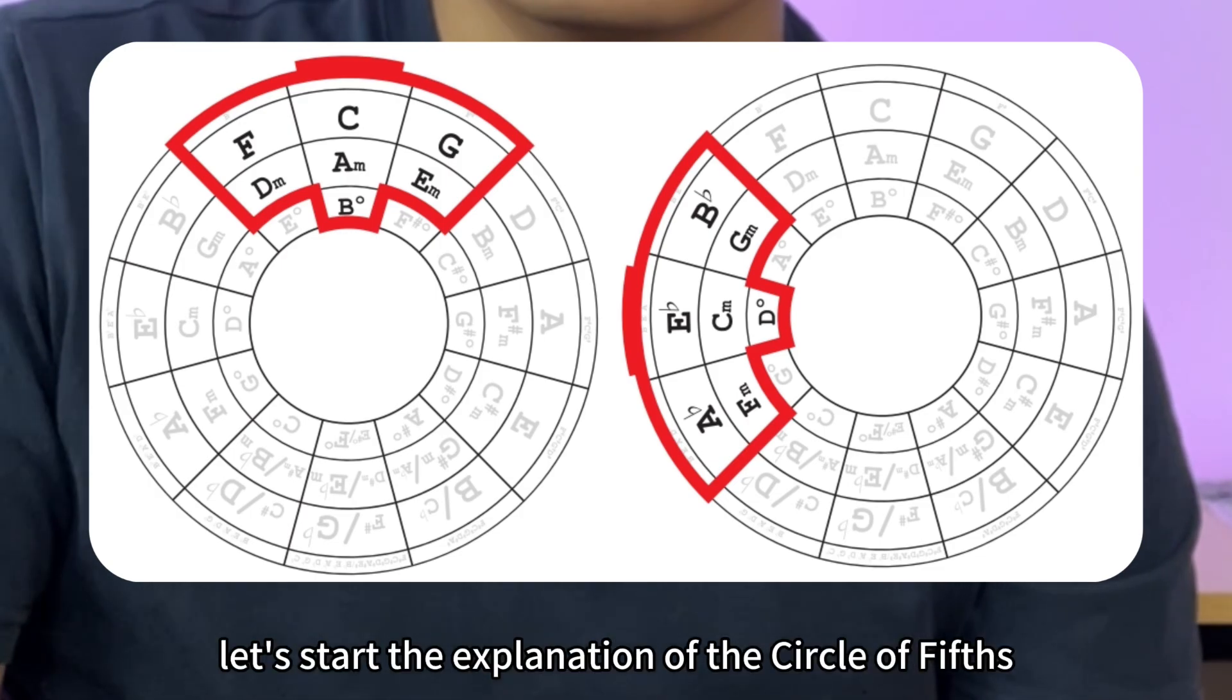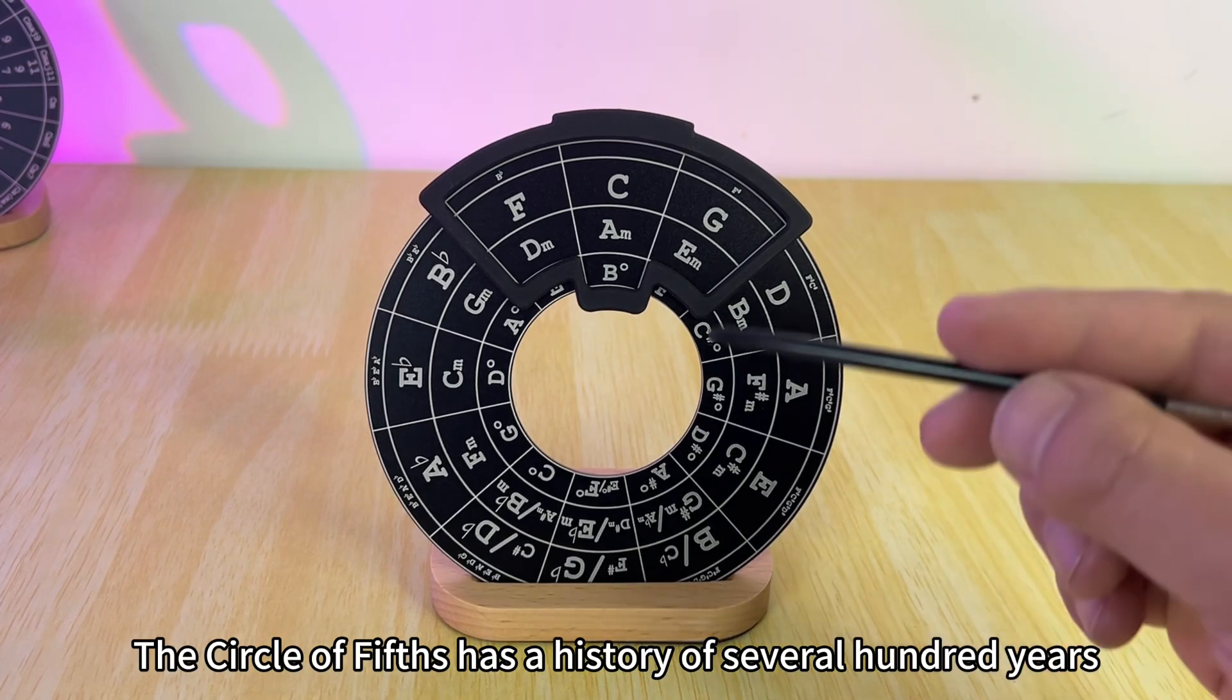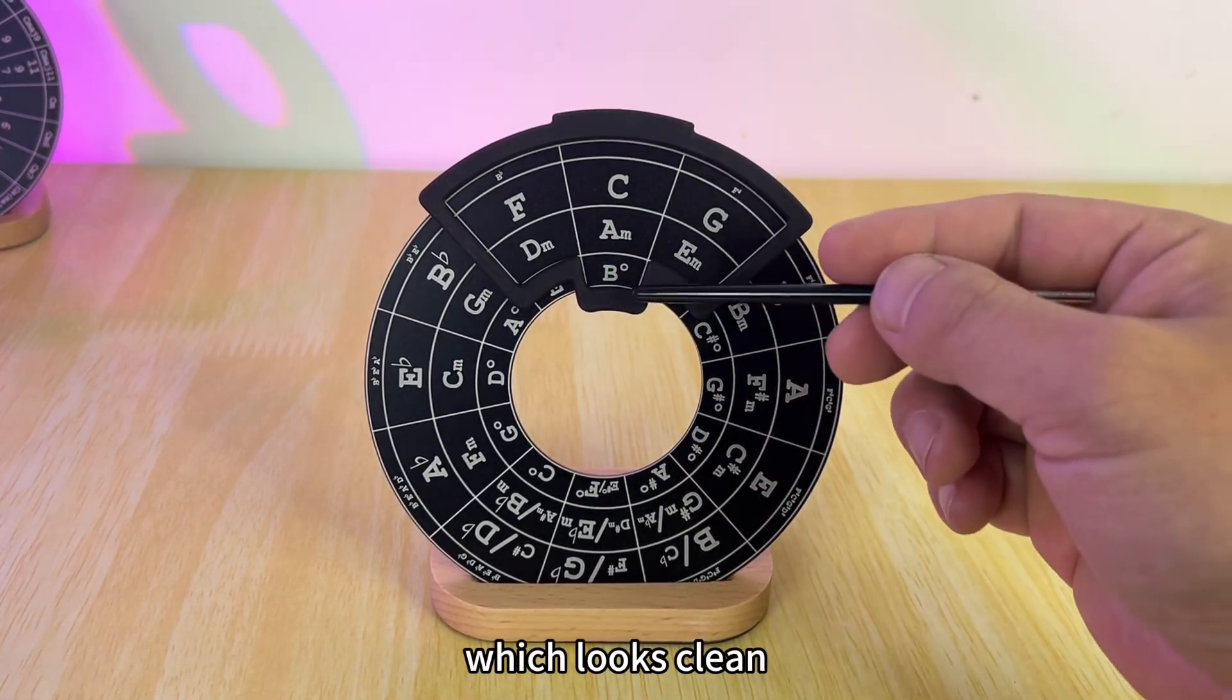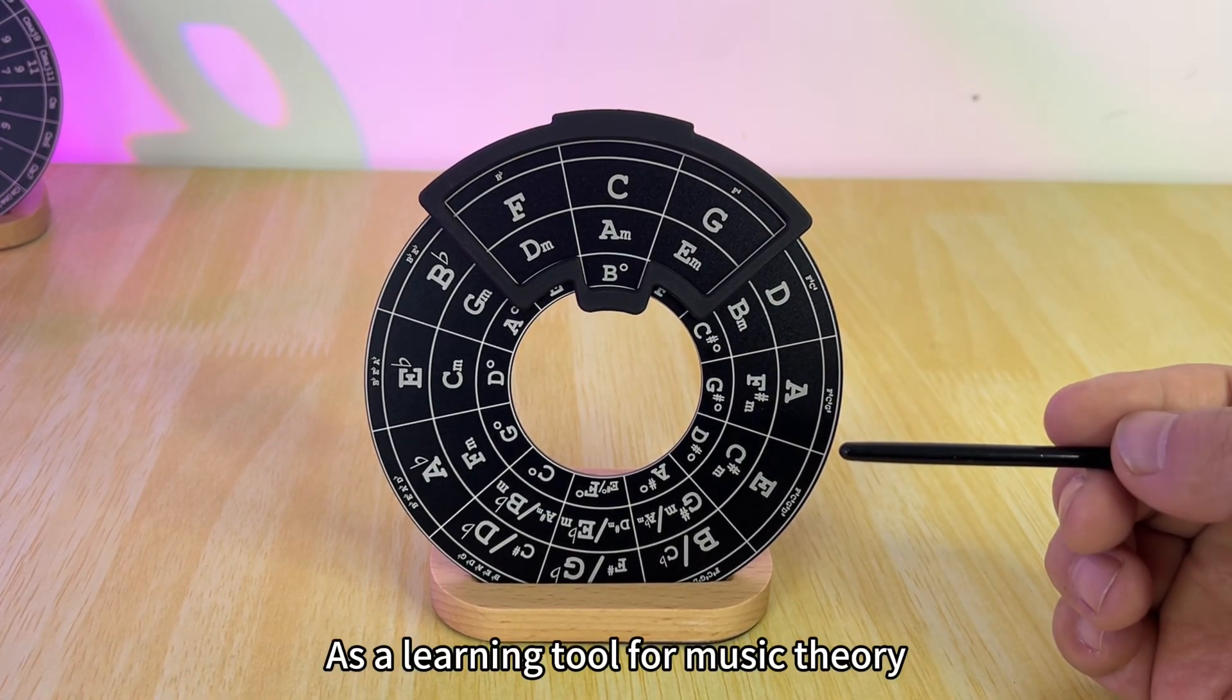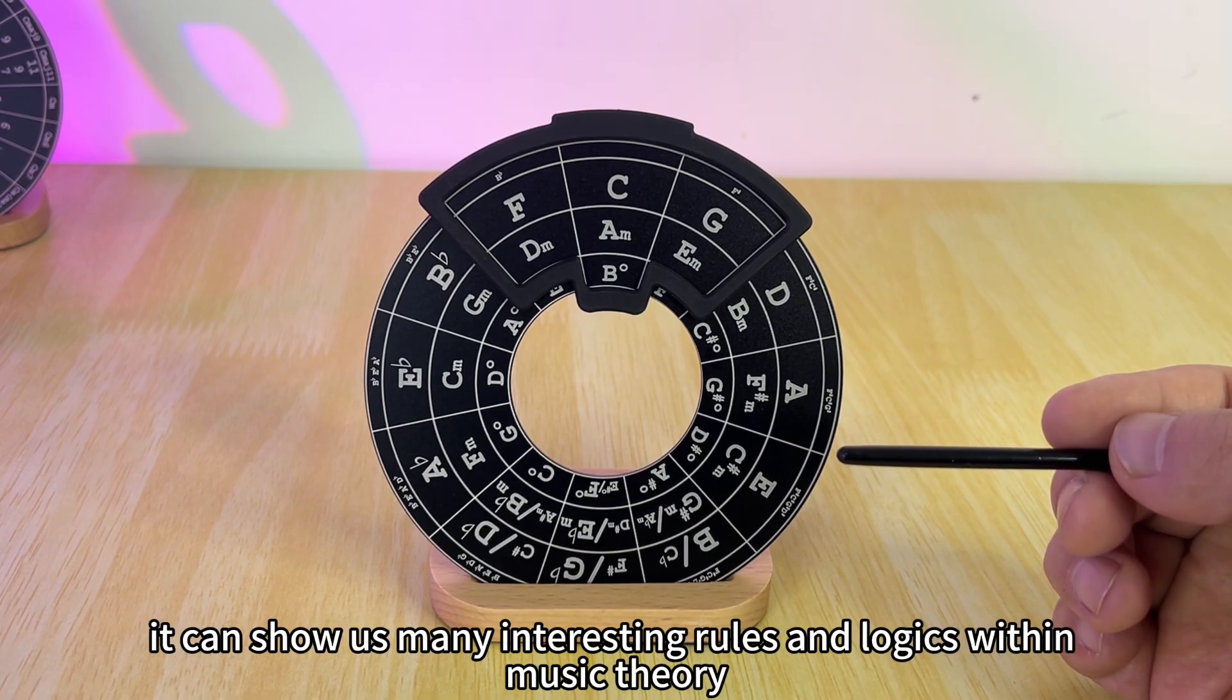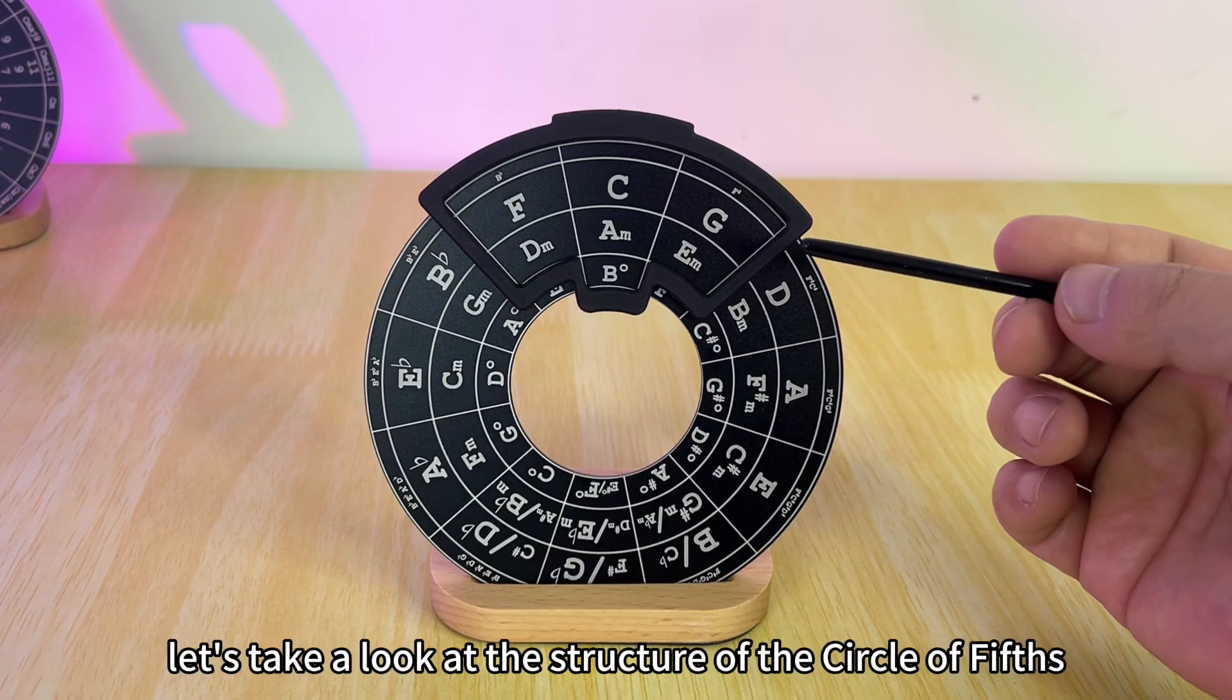Now let's start the explanation of the Circle of Fifths. The Circle of Fifths has a history of several hundred years. The layout of this Circle of Fifths is a traditional one, which looks clean, tidy, and intuitive. As a learning tool for music theory, it can show us many interesting rules and logics within music theory. First, let's take a look at the structure of the Circle of Fifths.